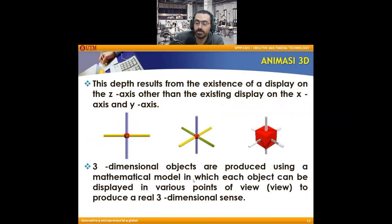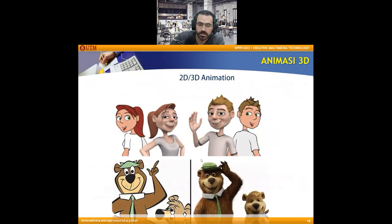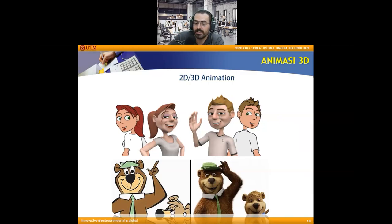In 3D animation we get points of view and produce real dimensional scenes, not just flat images. For example, Tom and Jerry has a flat 2D view, while 3D animation makes you feel the characters are real objects. You can see here the differences between 2D and 3D: in 2D it's a flat picture with only one dimension visible, while in 3D you can feel like it's a real object — the same applies to the bear, the dog, and other characters.